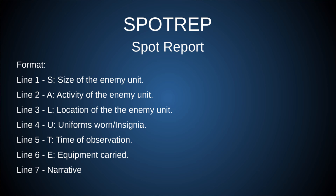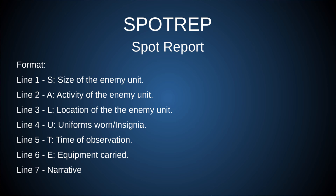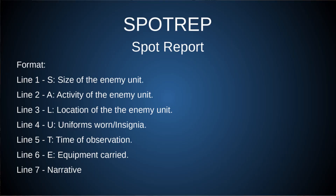A spot report is a very important type of report — you may have heard it as a SALUTE report, and that's the acronym it spells out. This is for when you have spotted enemy contacts and you are trying to alert your chain of command. Line 1, Sierra, is the size of the enemy unit. Line 2, Alpha, is the activity of the enemy unit — what are they doing? Are they digging fighting positions, advancing toward your position, doing recon, or flying drones? Lima is the location of the enemy unit — where did you spot them?